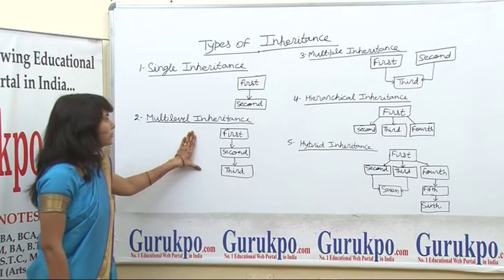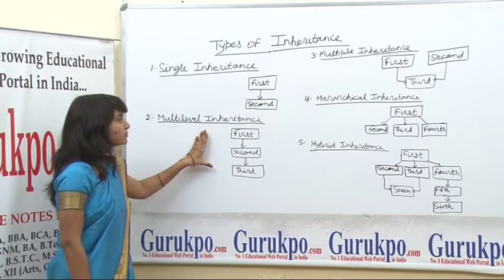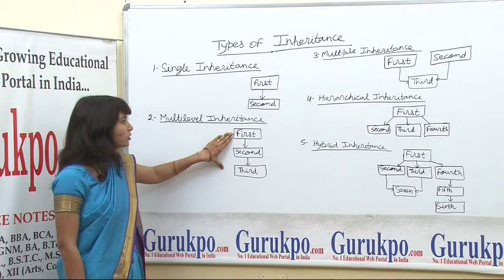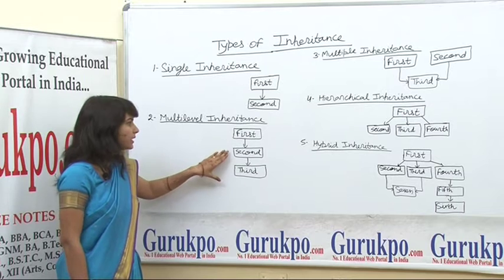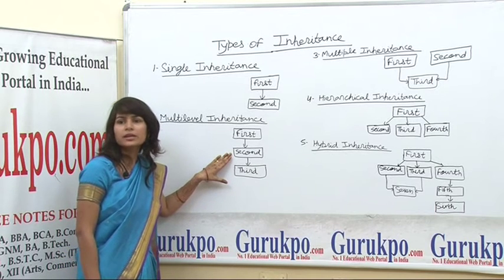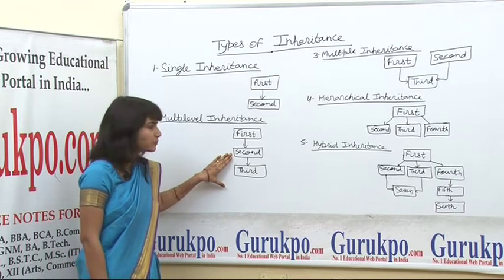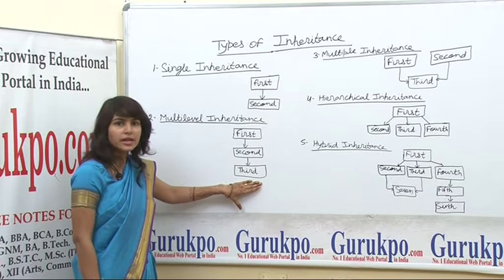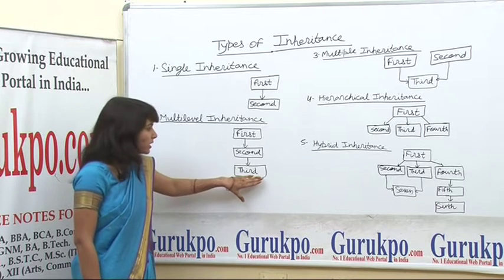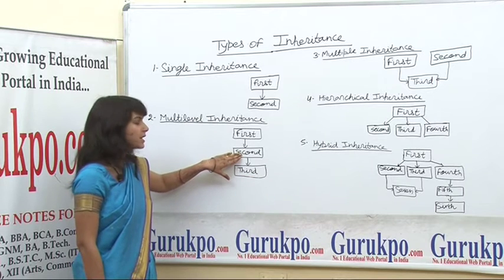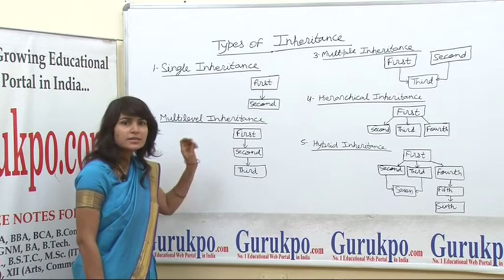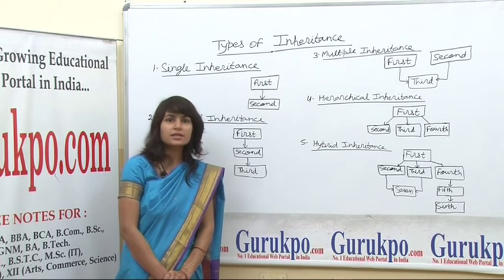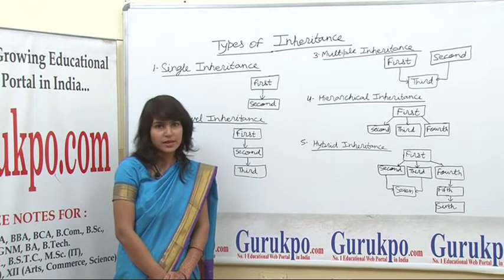Second is multilevel inheritance. In multilevel inheritance, at the top there is a base class, which is used by a second derived class. Then there is another derived class for which the second class works as a base class. Hence in multilevel inheritance, a derived class can also work as a base class.